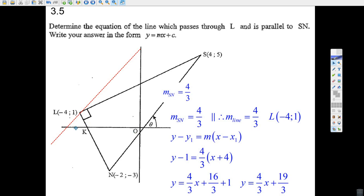Okay, there you go. There's the equation of the line that is parallel to SN but passes through minus 4 and 1. And that's it, let's try the next question.